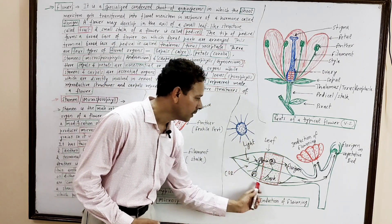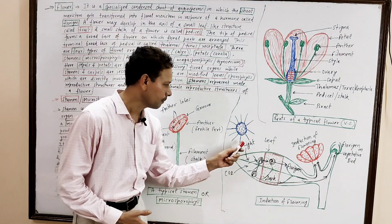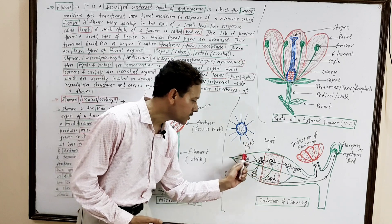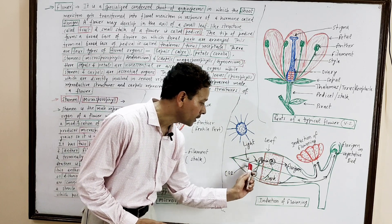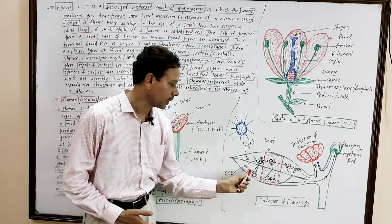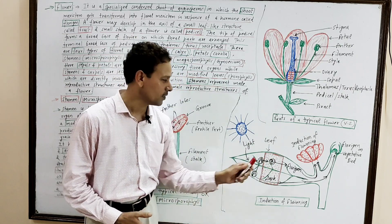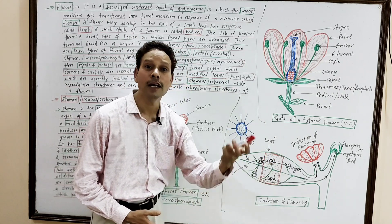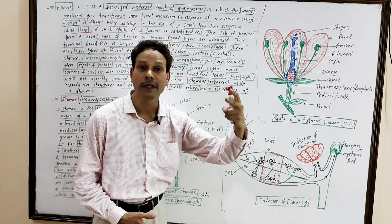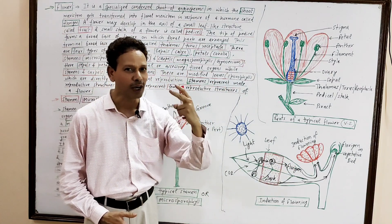Florigen gets synthesized in a leaf. During daytime, in the presence of light and CO2, an unstable product A is formed, and this unstable product A is converted into a stable final product B, or florigen, during darkness or night time.